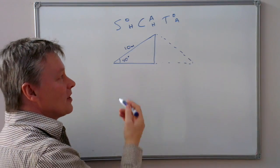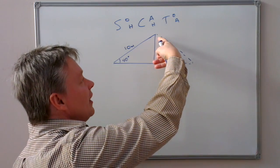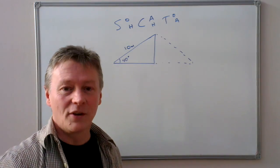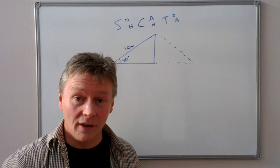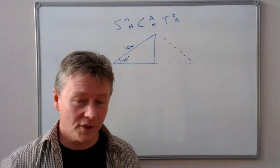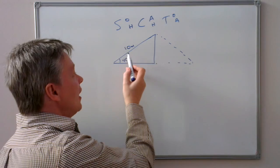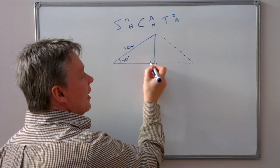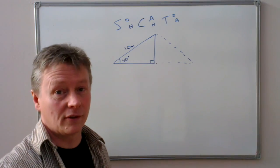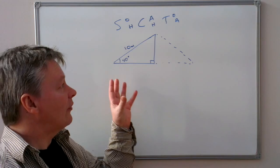So the information I have available to me is 40 degrees there and 10 meters there, and the fact it is a right angle. Now with all of these types of questions, the important thing is to make sure that you label the right angle triangle correctly.